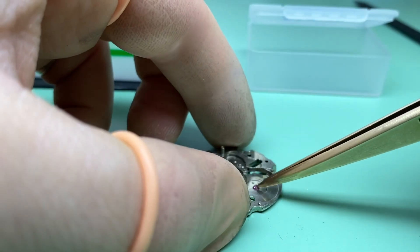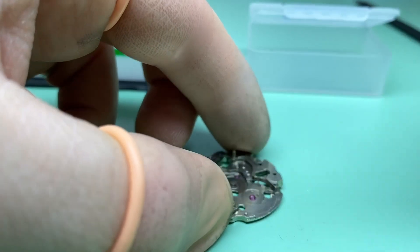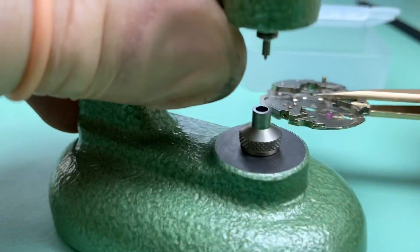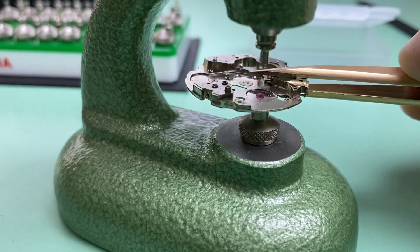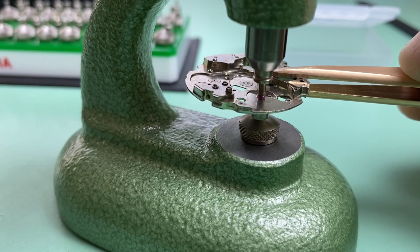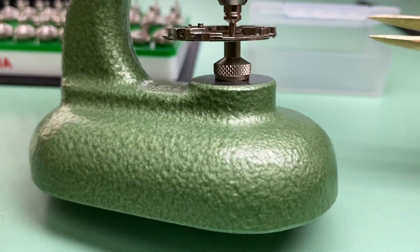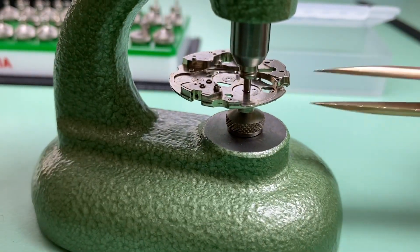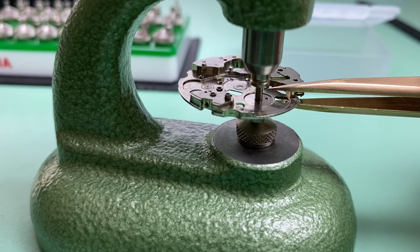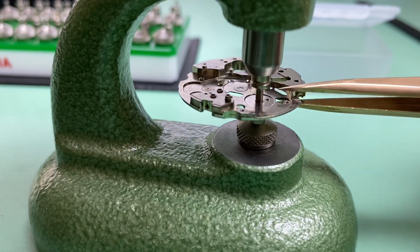So we want to loosely fit the jewel into the movement and bring it to our Horia tool. Now on our Horia tool, slowly lower the jewel into the movement and press it into place.